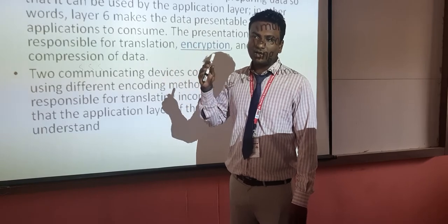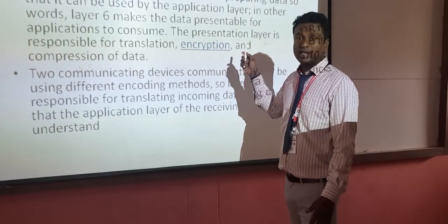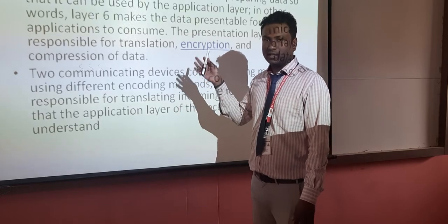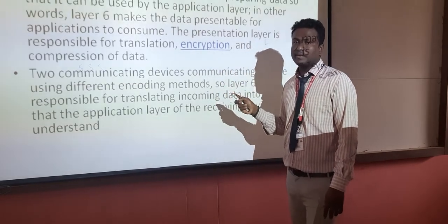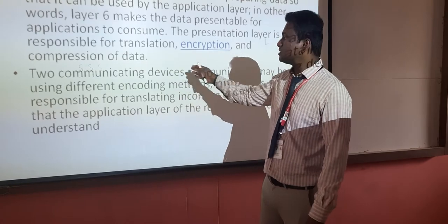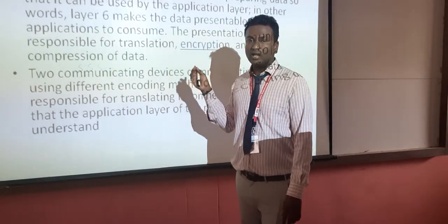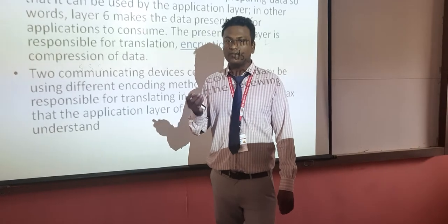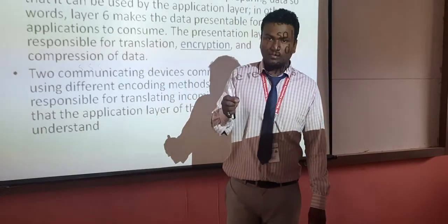The data from the application layer is a combination of alphabets and numbers. Before compression, we convert it to binary code. Data compression reduces the file size — the data will not be changed. For example, if you send a compressed mail to anyone, the data cannot be modified; only the file size is reduced.